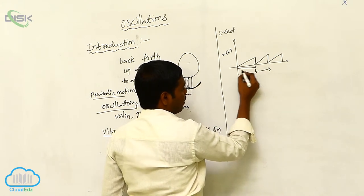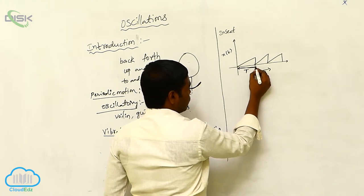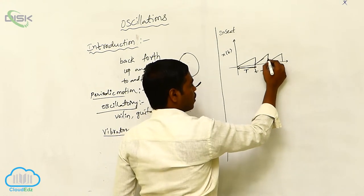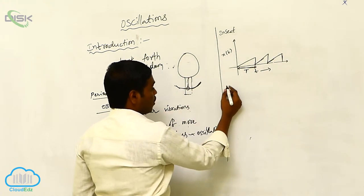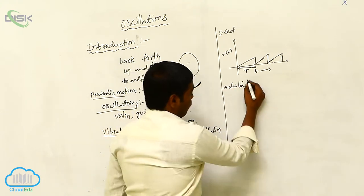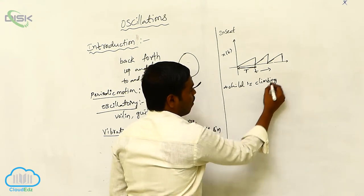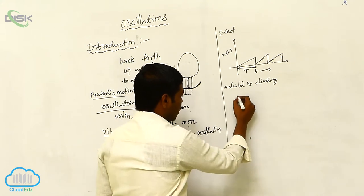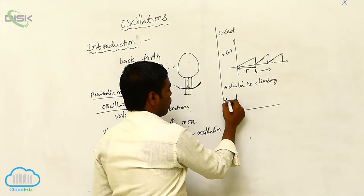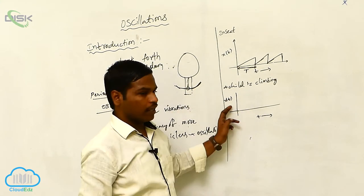This repeating motion is periodic. Similarly, a child climbing up and coming down also traces a repeating pattern on the distance-time graph. After completing one cycle, the motion of the child climbing and falling is again repeated. The time taken for one complete repetition is called the time period.